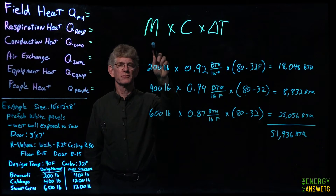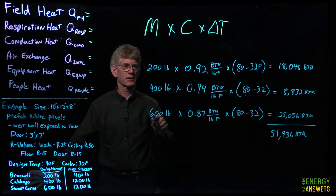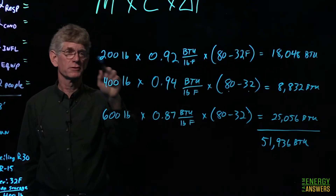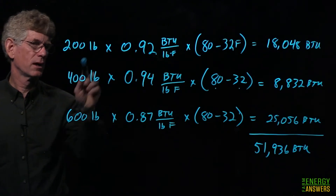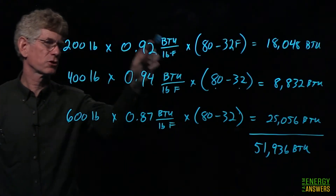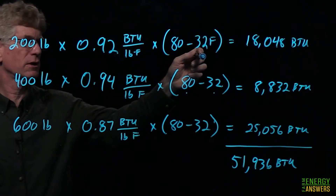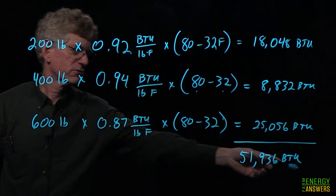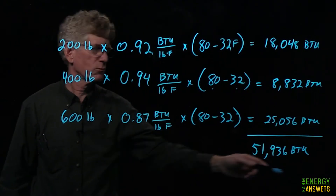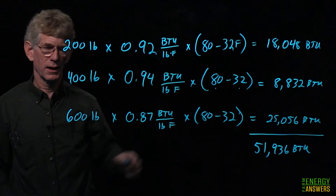Putting this into our example — mass × specific heat × temperature difference — for each crop in our daily harvest: 200 pounds of broccoli, 400 pounds of cabbage, and 600 pounds of sweet corn. The specific heat values can be looked up in a table; averaging about 0.9. The produce comes in from the field at 80°F and we're cooling it to 32°F. We calculate each crop and sum them — in this example we have to remove about 52,000 BTUs from the crop to get it down to cooler temperature.